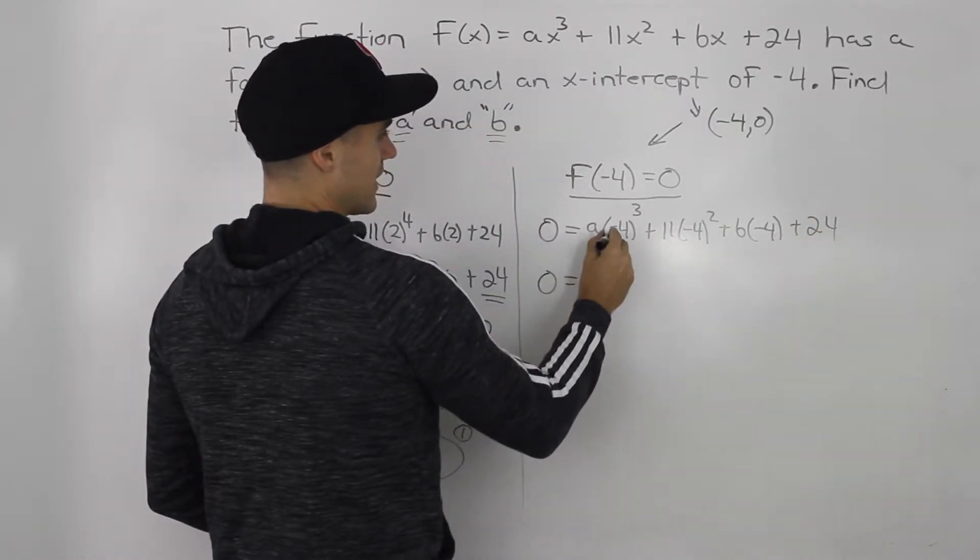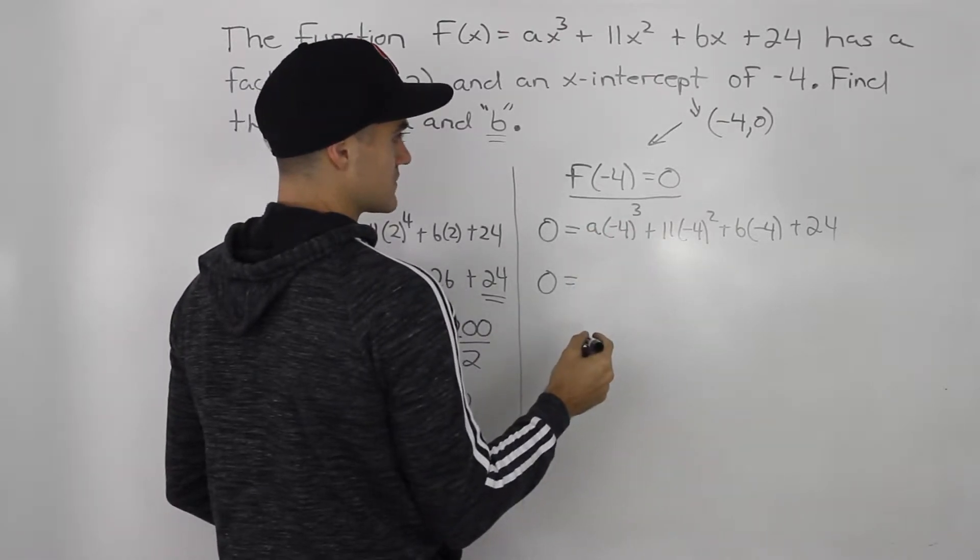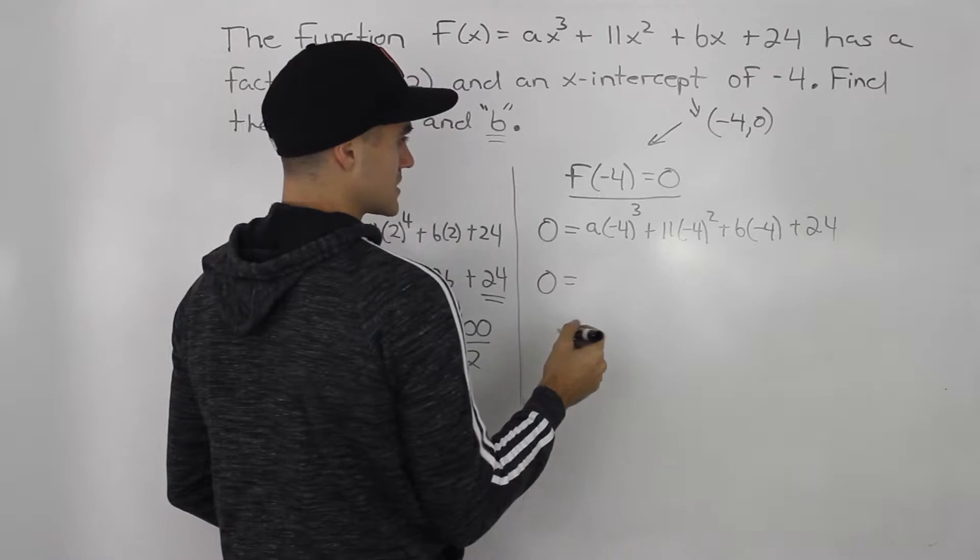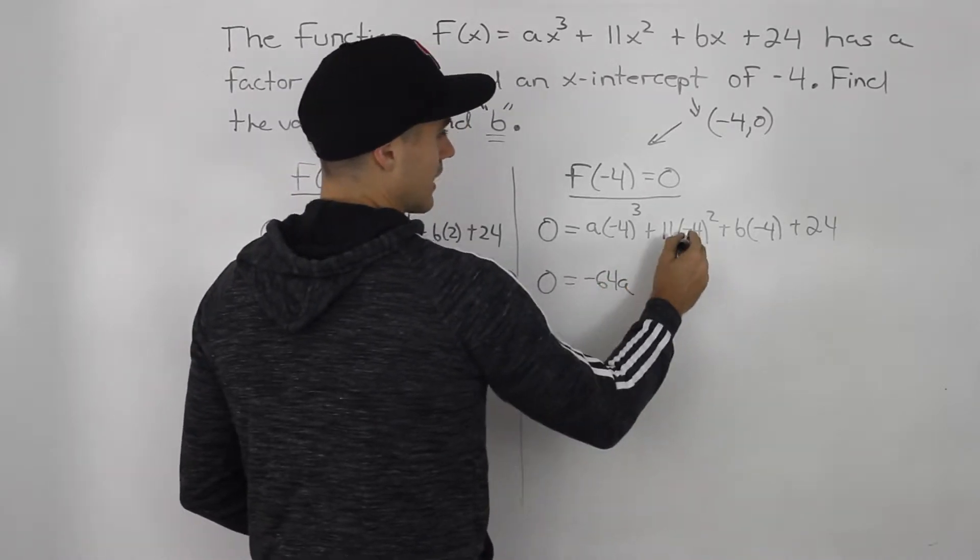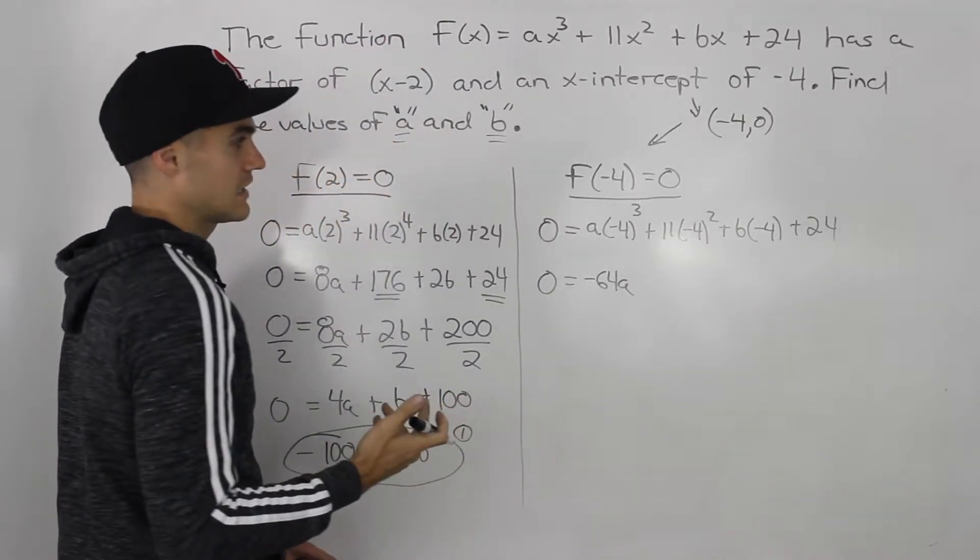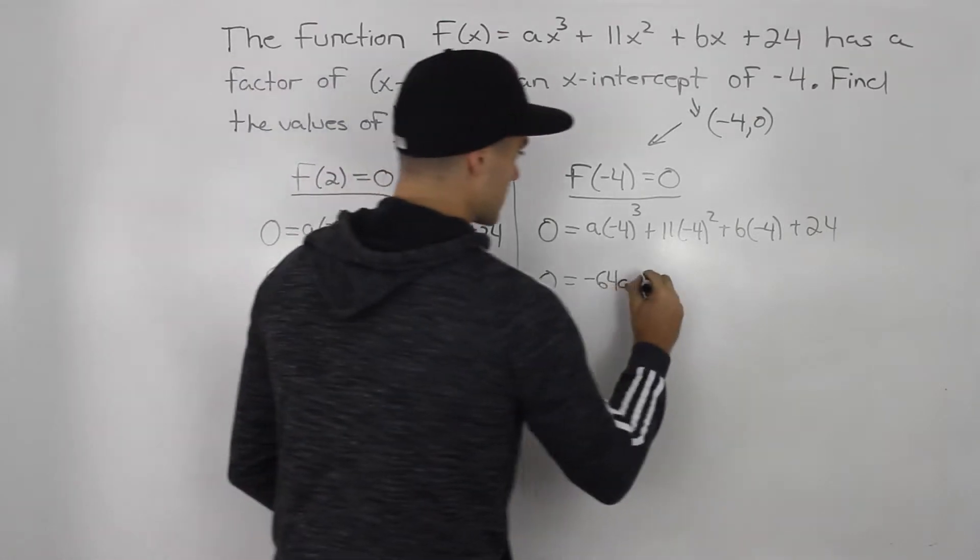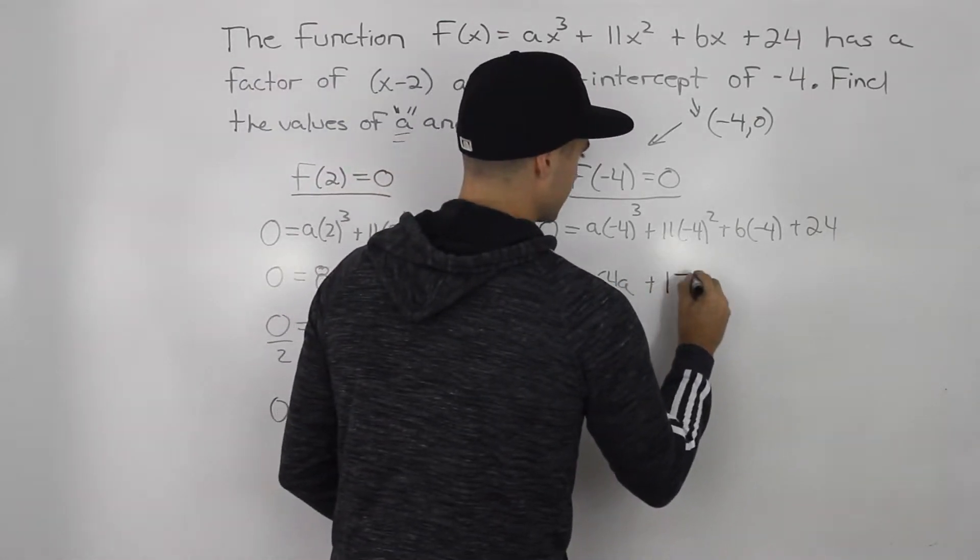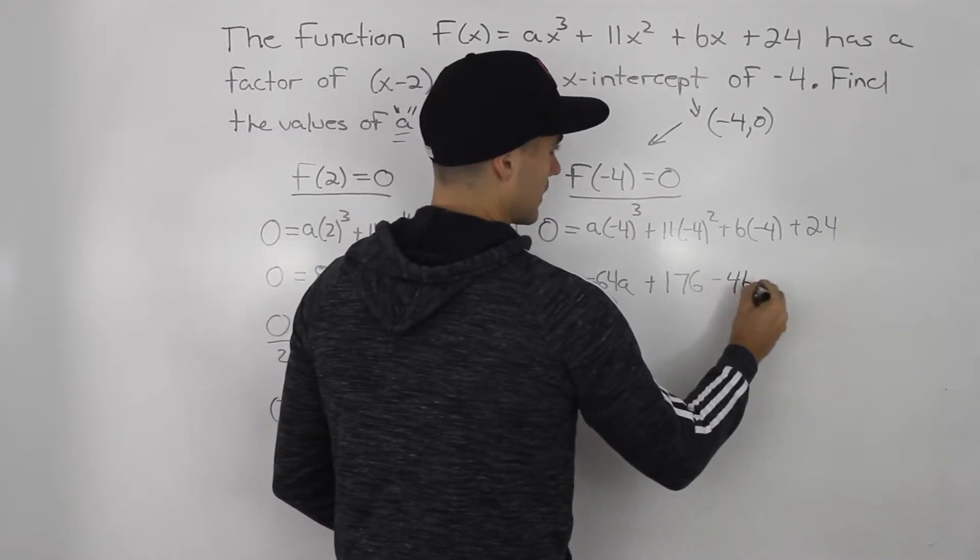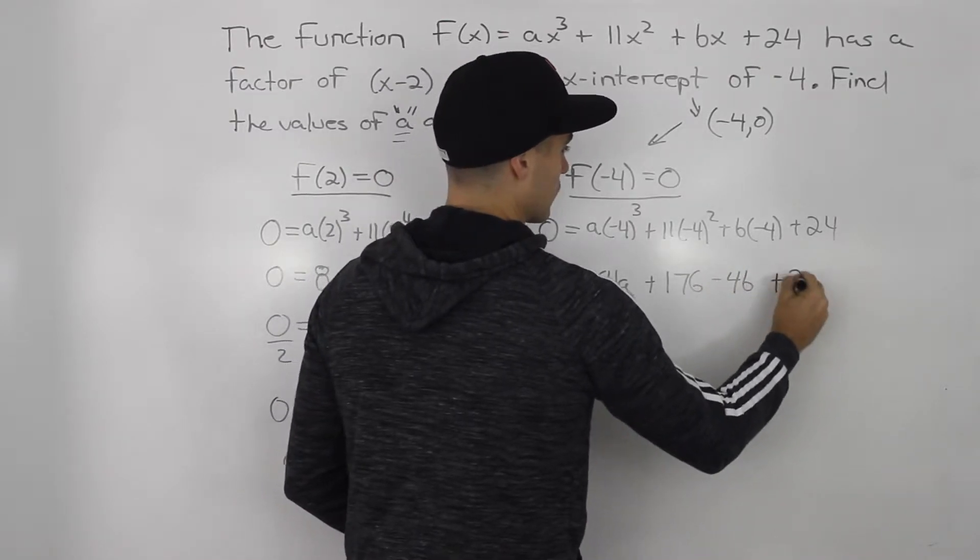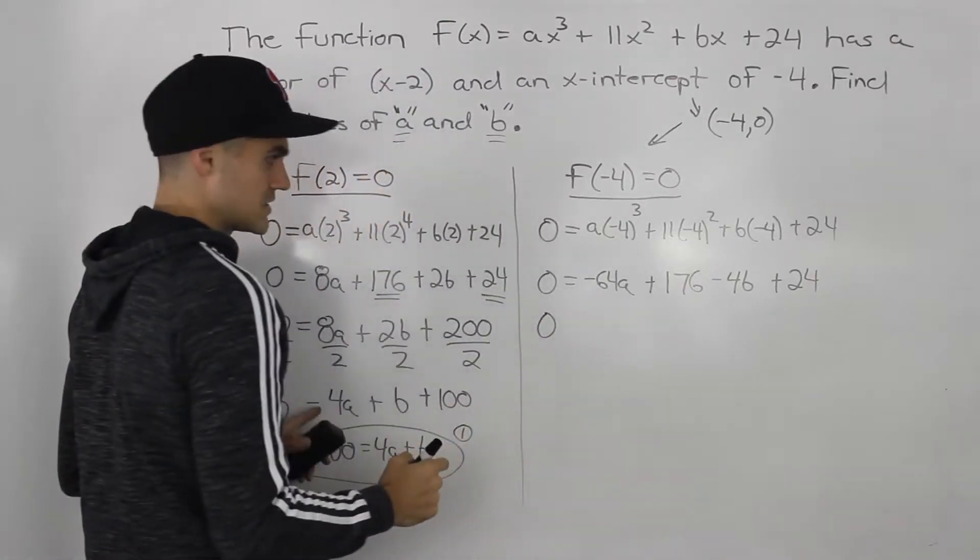So 0 equals negative 4 to the power of 3 gives us what? That gives us negative 64. So this would be negative 64a. Negative 4 squared is 16 times 11. We have the same thing here is 176. Negative 4 times b is negative 4b. And then we have this 24 here.